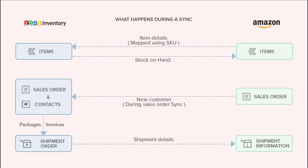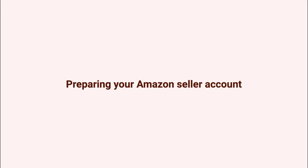By integrating your Amazon seller account with Zoho Inventory, you will be able to sync your online items and sales orders from Amazon and fulfill them inside Zoho Inventory. On top of that, the integration automatically adds new Amazon customers to your inventory database and updates real-time stock levels and shipment information from Zoho Inventory to Amazon. Simply put, this integration lets you manage and track all your online sales, offline sales, and shipments from a single app.